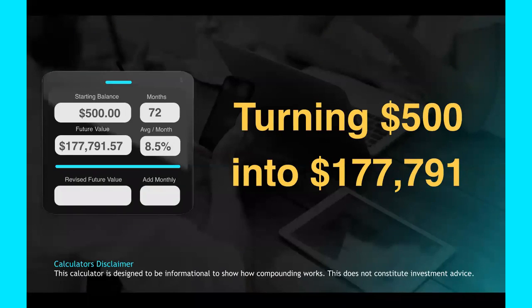So I'm going to go over some numbers. I'm going to show you how compounding can turn $500 into $177,791. Check this out. And again, this calculator is designed to be informational to show how compounding works. This does not constitute investment advice or imply that you're going to get these kinds of results. A starting balance of $500 at 8.5% compounded per month in just 72 months turns into over $177,000.